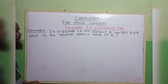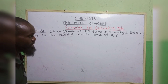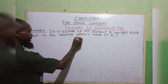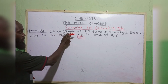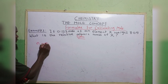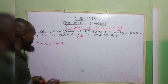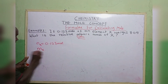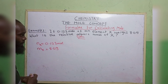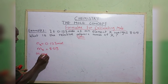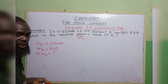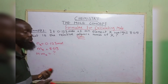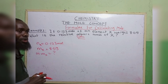Example 3: If 0.123 moles of an element X weighs 8.0 grams, what is the relative atomic mass of that element X? Anything in moles is our n, so n equals to 0.123 moles. Element X weighs 8.0 grams means mass equals to 8.0 grams. Note that relative atomic mass is not the same as molar mass, but when you get the molar mass, you remove the unit to get the relative atomic mass. We use the word atomic mass because we are dealing with single elements; if dealing with a compound, we talk about relative molecular mass.